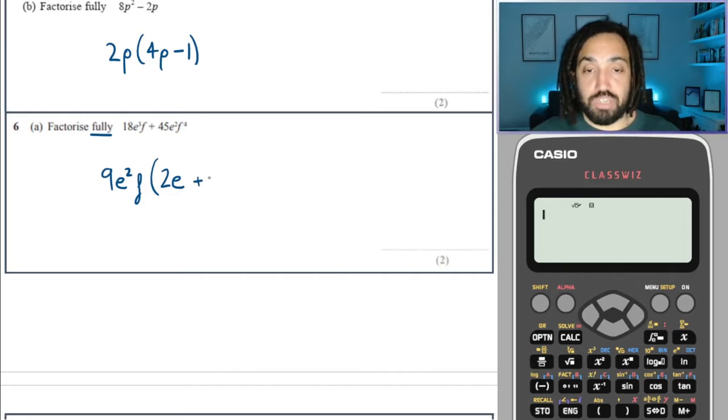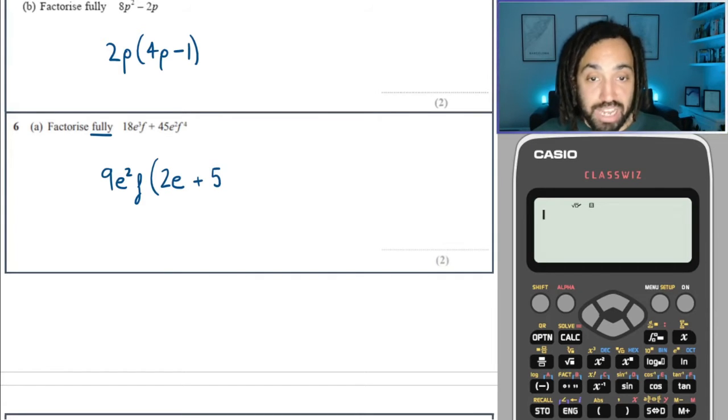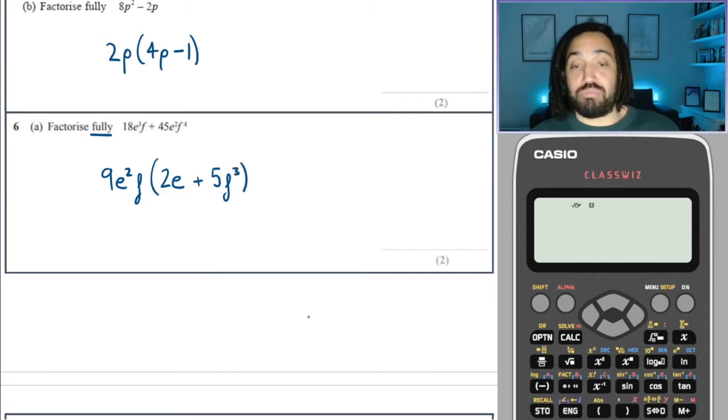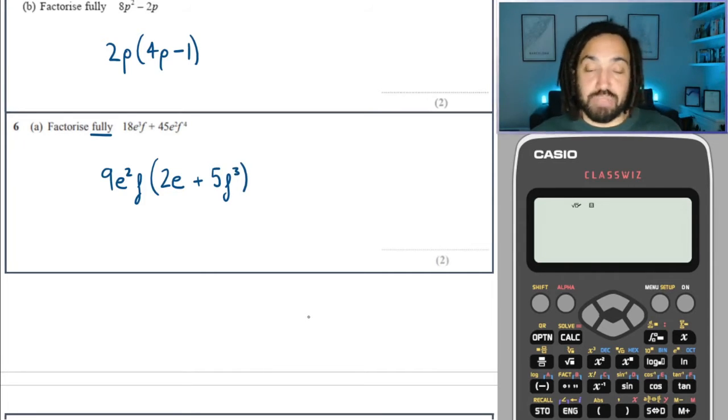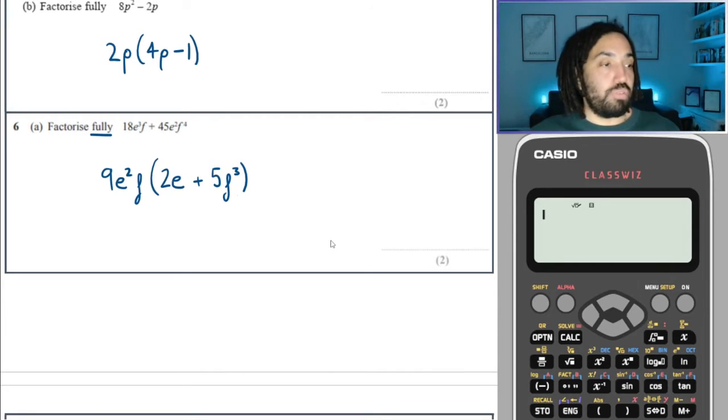Nine times two makes 18. E squared times E makes E cubed, and F is already there, so that is good. Plus, what have I got times nine by to make 45? It is five. E squared is already there, so that's good. We've got an F to the one, but I need an F to the four, so I've got to times by F to the three, because remember, when you times Fs or any letters that are the same, the powers add. So here, F to the one and F to the three add to make F to the four. Beautiful.